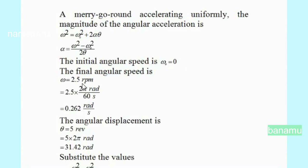One revolution equals 2 pi radians, and one minute equals 60 seconds. So omega equals 2.5 times 2 pi radians divided by 60 seconds, which gives omega equals 0.262 radians per second.